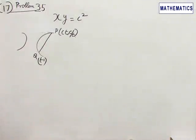Question 17 refers to problem 35. XY equals C squared is a rectangular hyperbola.